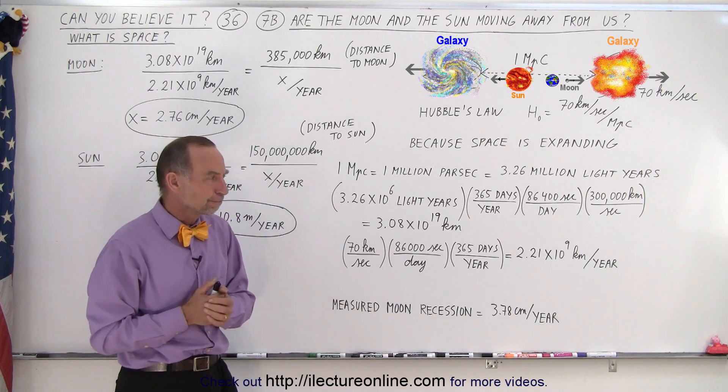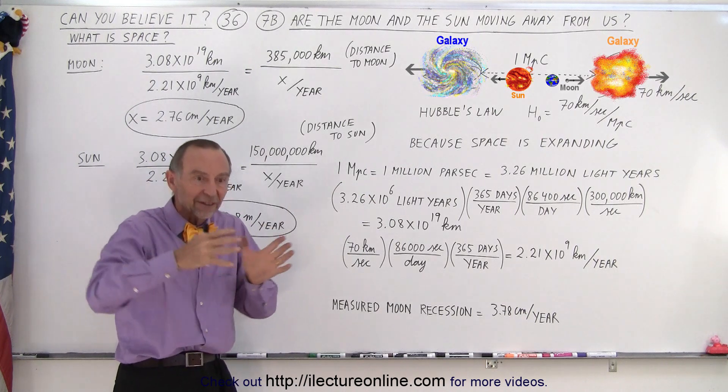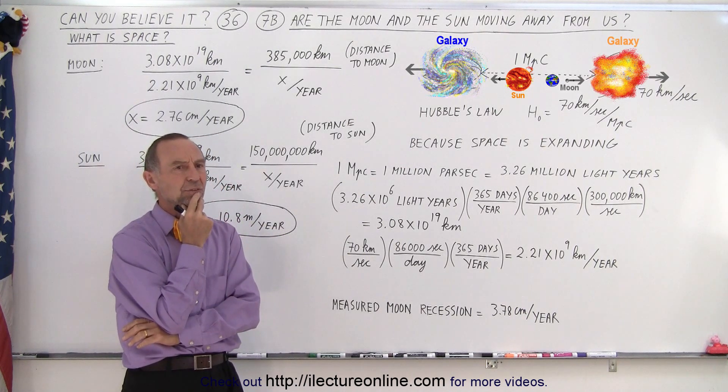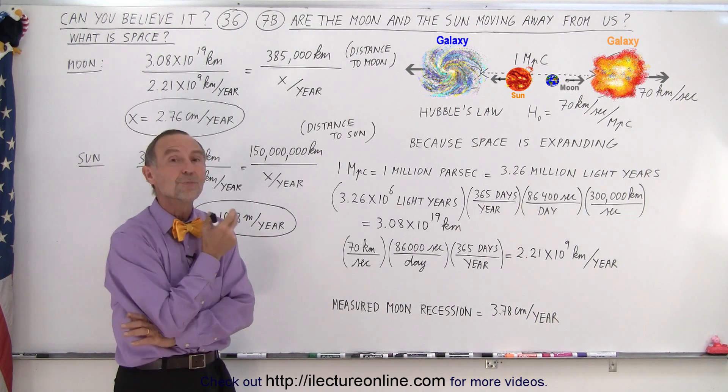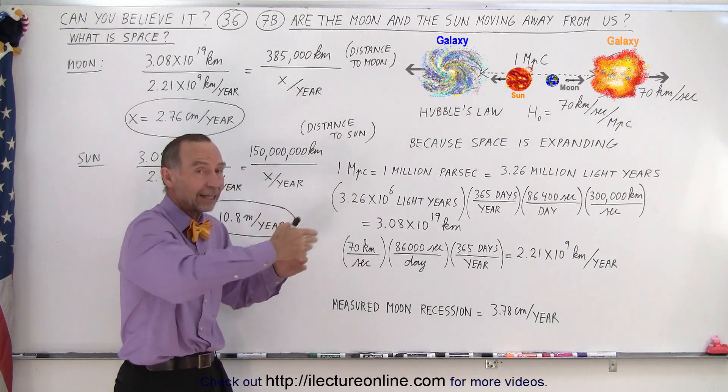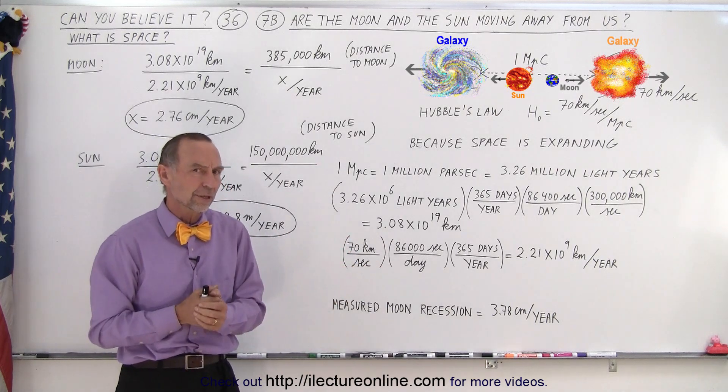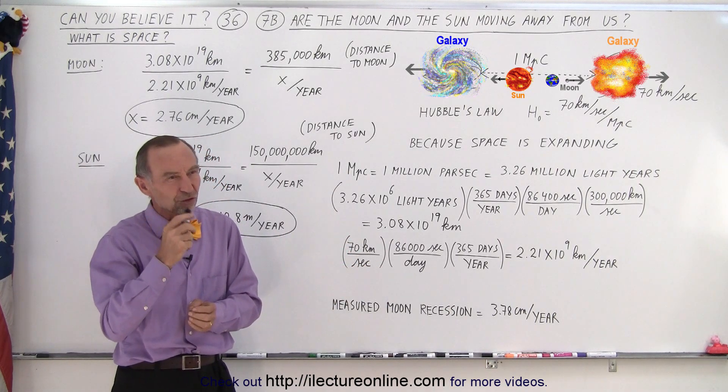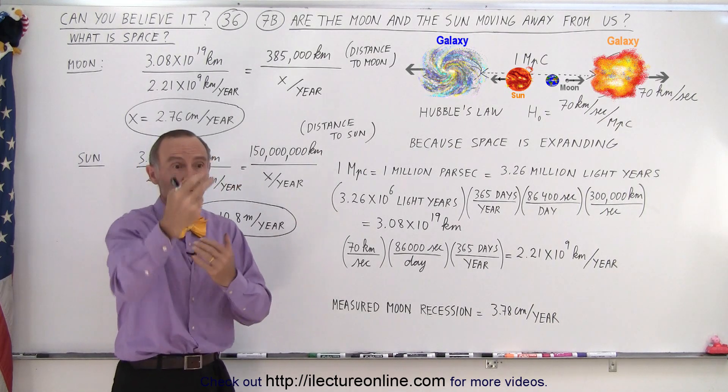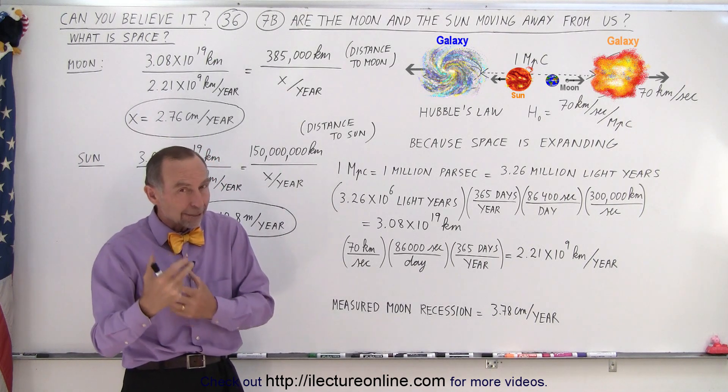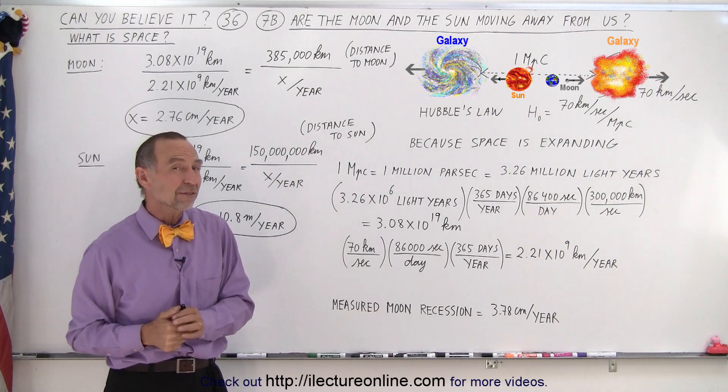Then my wife asked, does that mean that the moon is moving away from us? Does that mean that the sun is moving away from us? Does all of space expand? And the answer is probably. So let's calculate how far the moon would move away from us in a single year at the same scale as the Hubble constant, for the same reason that galaxies are moving apart from one another. And of course we understand that gravitational forces may fight against that because the earth and the moon are attracted to one another gravitationally. It may not be affected as much by the expansion of space. Maybe it is, maybe it isn't, we don't know for sure.